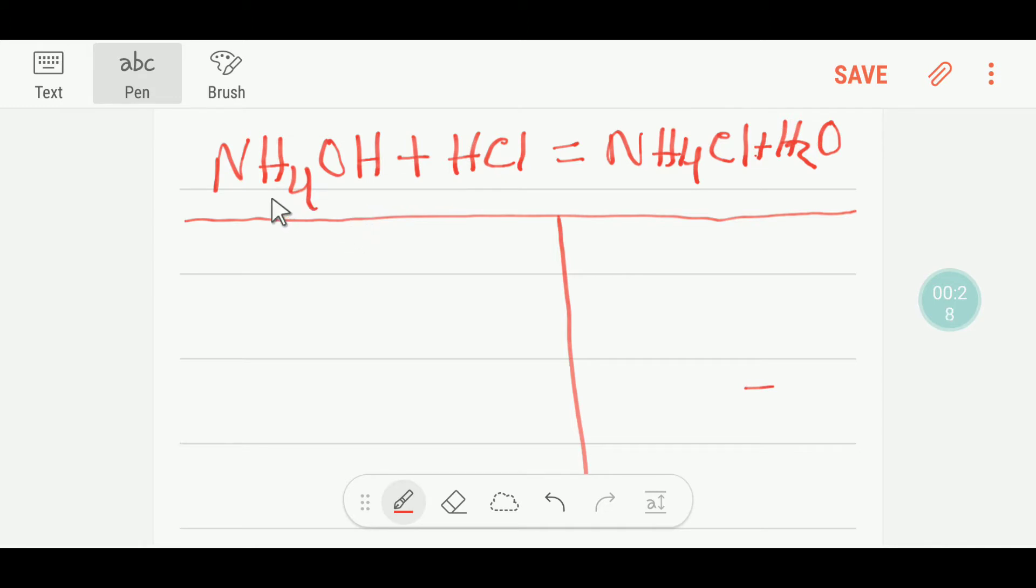On the left-hand side, or reactant side, we have here one nitrogen. And we have four hydrogen plus here one hydrogen plus here one hydrogen, so I'm getting here six hydrogen on the left-hand side. And here we have one oxygen, and here we have one chlorine.